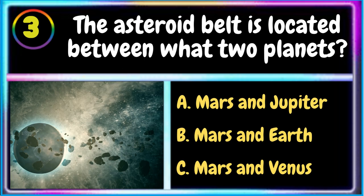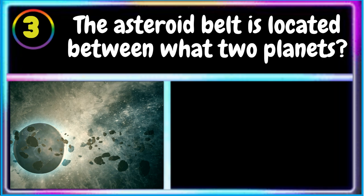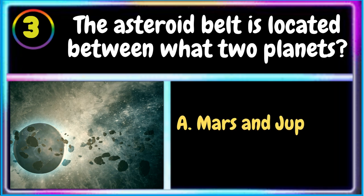3. The asteroid belt is located between what two planets? A. Mars and Jupiter B. Mars and Earth C. Mars and Venus. The correct answer is A. Mars and Jupiter.